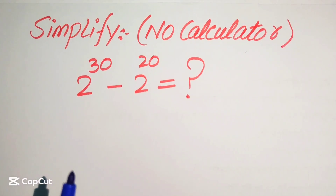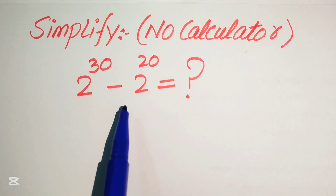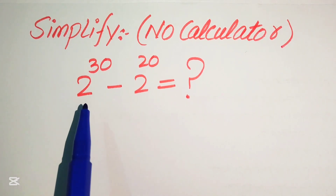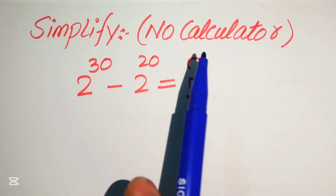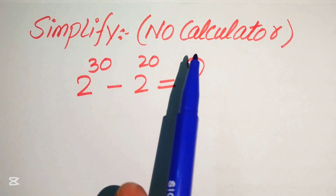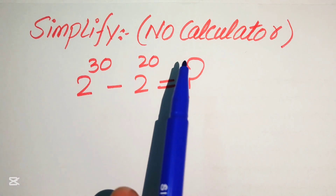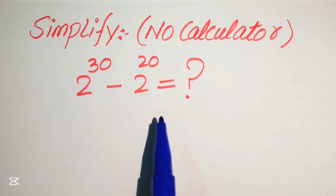Hello everyone. How to simplify this nice algebraic expression: 2 to the power of 30 minus 2 to the power of 20, written into simplified form. Note that a calculator is not allowed in this problem, so we will show all of the working on this page.